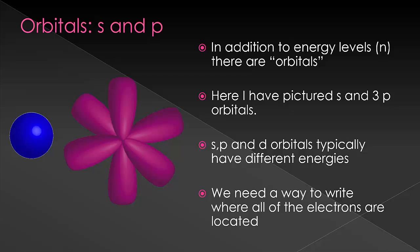The ones shown here are the s orbital in blue and the three p orbitals in pink. Each orbital has a shape — each p orbital has the shape of two balloons tied together, and there are three of them, one for each axis. We'll get into these orbitals in far more detail in later videos, where we'll also introduce d and f orbitals.